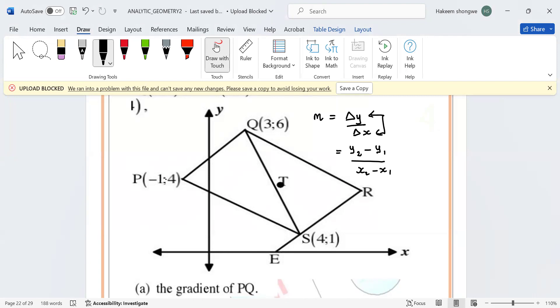So for the two points, we're going to label them. Let's take point P as x₁ and y₁, then point Q will be x₂ and y₂. Then you're simply going to substitute these values to find the gradient of PQ.